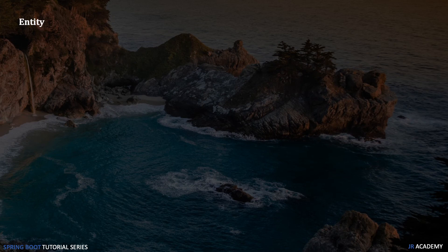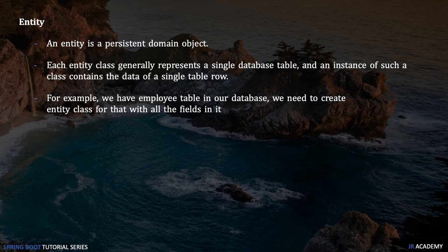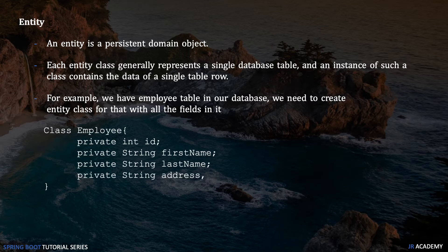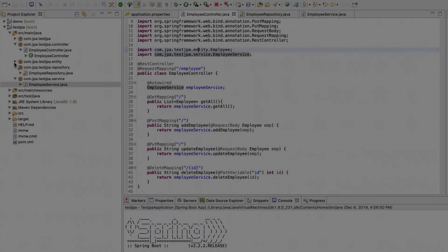Another important term is 'entity.' An entity is a persistent domain object, and each entity class generally represents a single database table. For example, if we have an employee table in our database, we need to create an entity class named Employee with all the fields from that table. Each row of the table will be represented by an instance of this entity class. So if we have 10 entries in the employee table, we create 10 instances of the Employee entity class to hold the data.